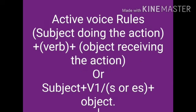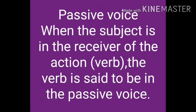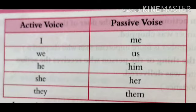In passive voice, we use the V3 form and use 'by' after V3, and we never change the tense. In active and passive pronoun rules: I changes to me, we changes to us, he changes to him, she changes to her, they changes to them. You and it remain unchanged in the passive form.